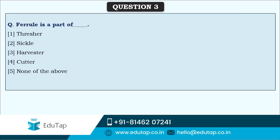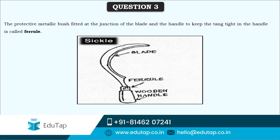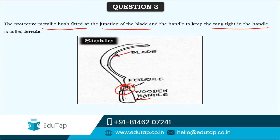Next question: ferrule is a part of which of the following? Ferrule is actually a part of a sickle. As you can see in the sickle picture, this is the blade and this is the wooden handle. Ferrule is that part which joins the blade and wooden handle — it is a protective metallic bush fitted at the junction of the blade and wooden handle to keep the tang tight in the handle. This is called a ferrule.